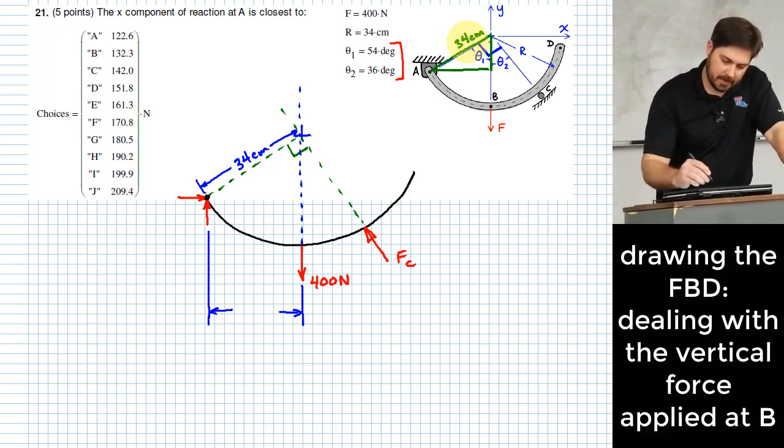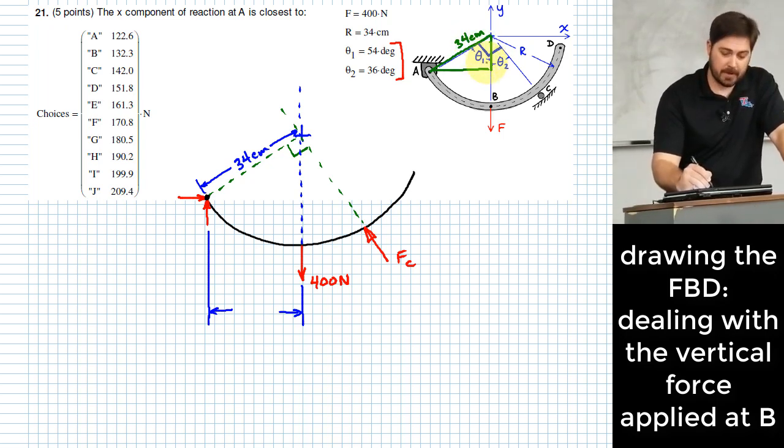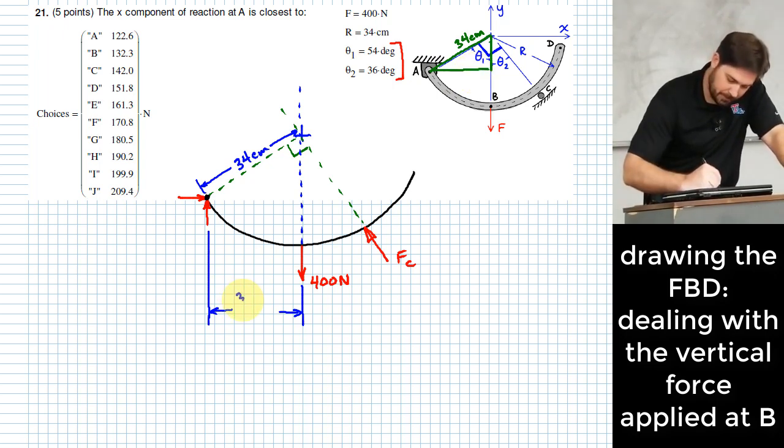Or the other way of saying that is that 34 centimeters times the sine of theta one is going to be this length right here. So put that right here, 34 centimeters times the sine of theta one is 54 degrees.